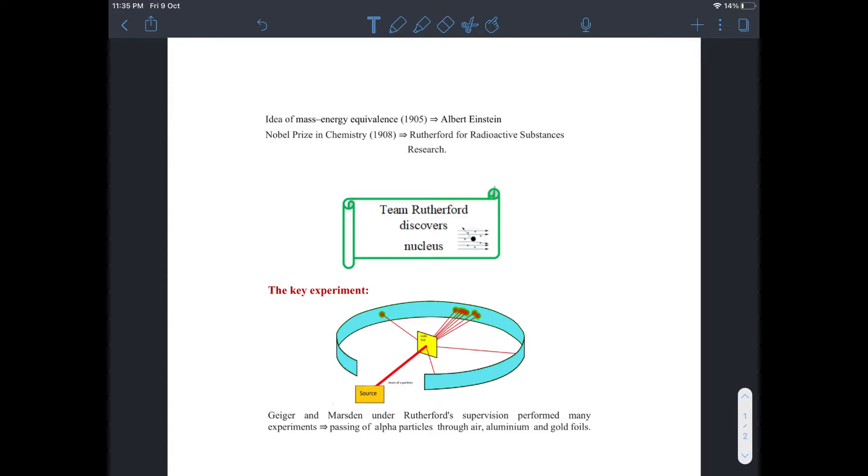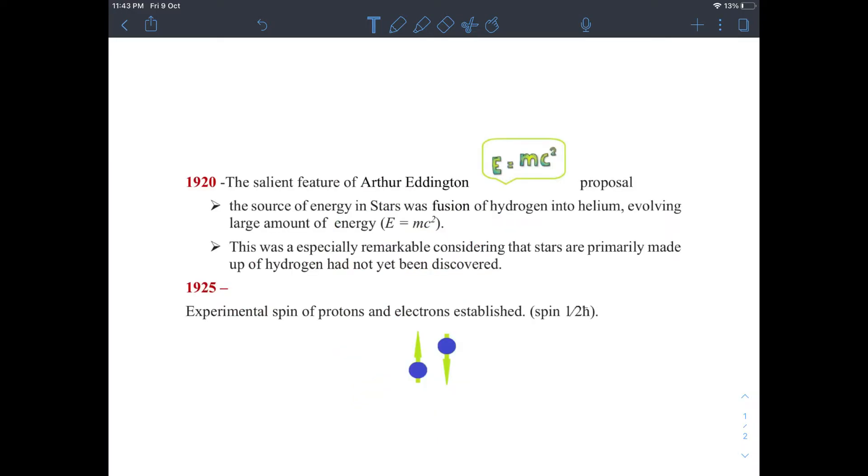According to Rutherford's atomic model, the nucleus consists of positively charged particles with equal number of embedded electrons to balance out the charges. In 1920, Arthur Eddington proposed that the source of energy in stars was the fusion of hydrogen into helium, evolving large amount of energy which is given by E equals mc squared.